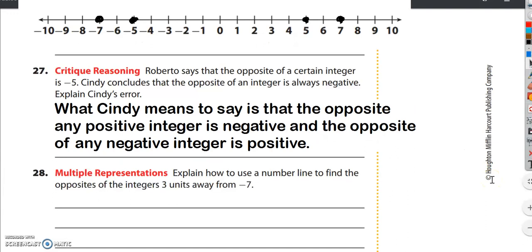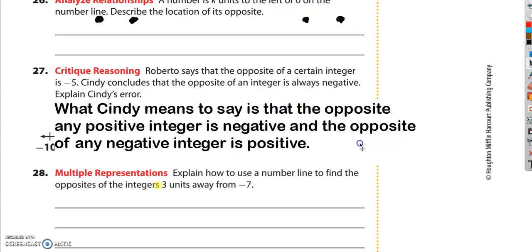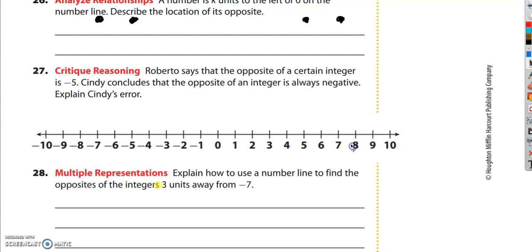Question 28. Explain how to use a number line to find the opposite of the integers 3 units away from negative 7. And I want to point out that this is plural, integers plural. So I'm going to grab this and bring it down. Let's just go find negative 7. Negative 7 is right here.